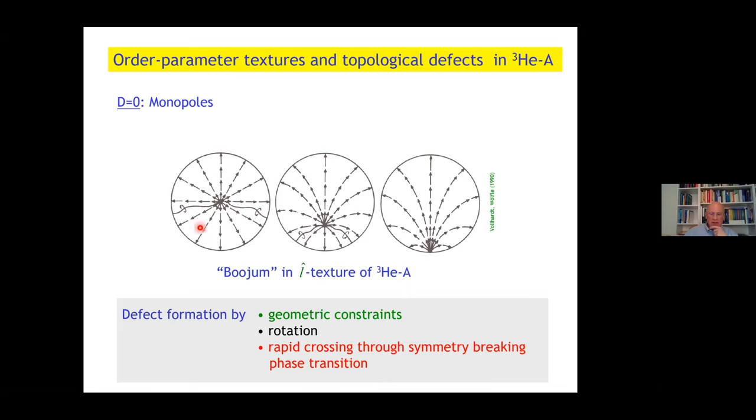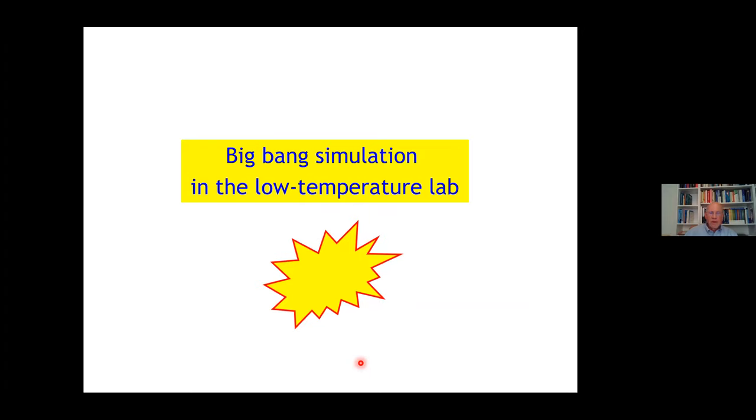Defects can be formed by geometric constraints and rotation, and there is a third, quite independent mechanism. They can be generated by rapidly crossing through a symmetry breaking phase transition. That is very interesting, and that I'm going to explain now. Because I want to present you with the Big Bang simulation in the low temperature lab.